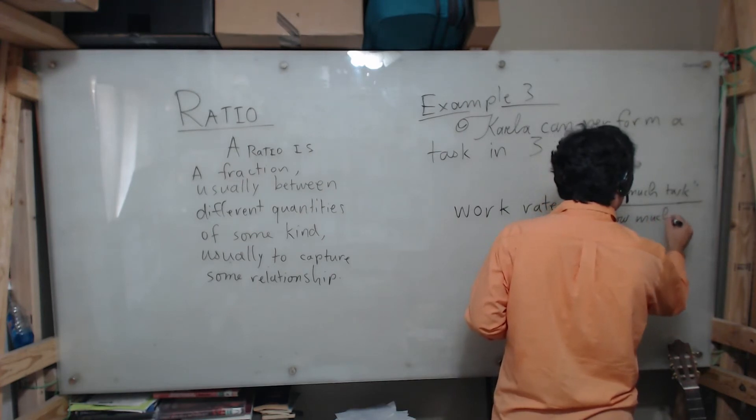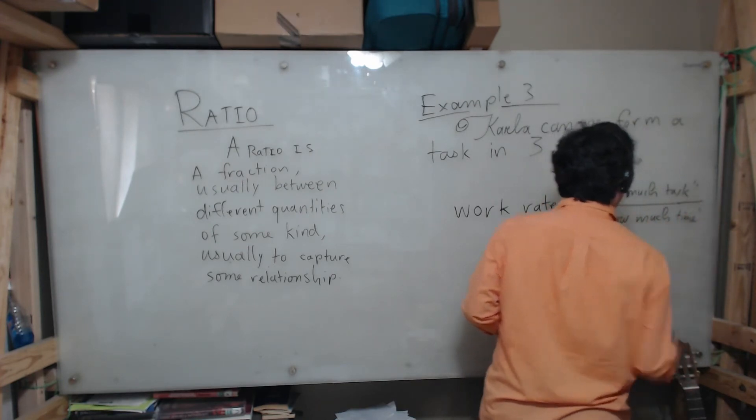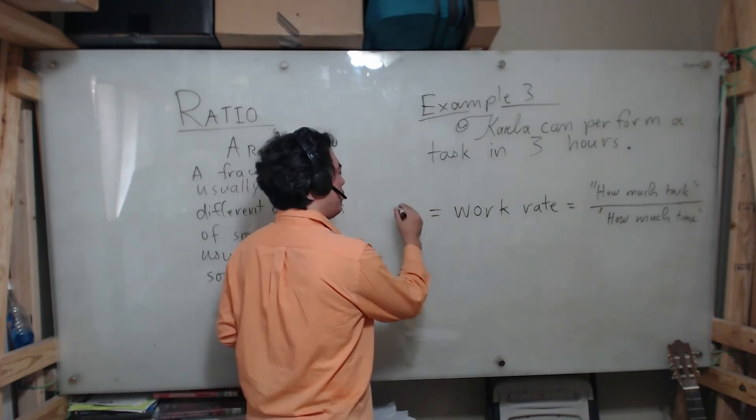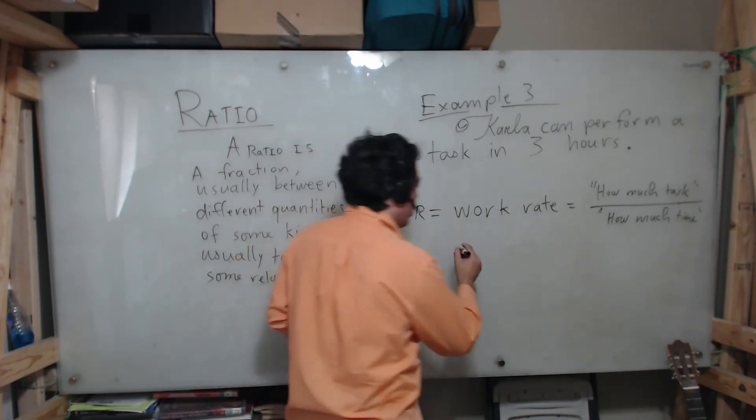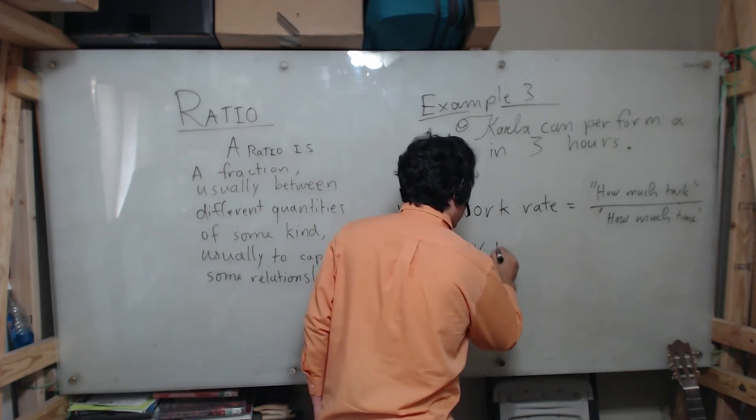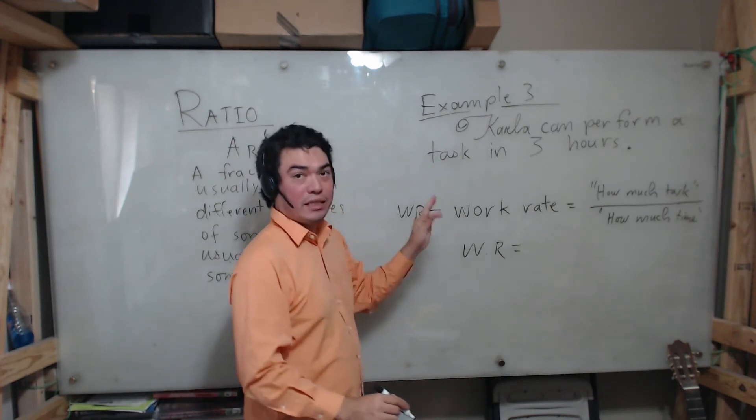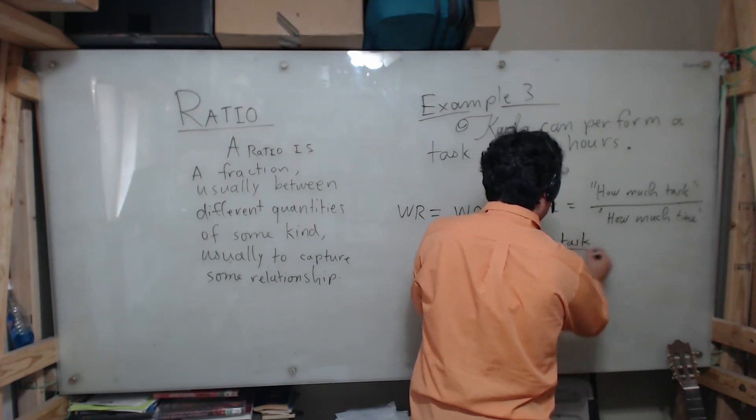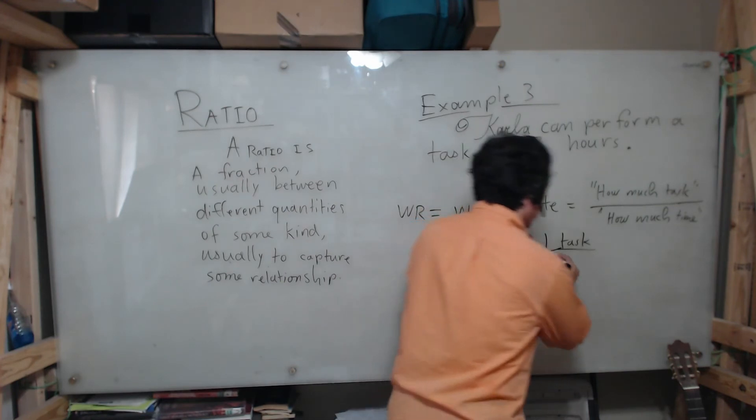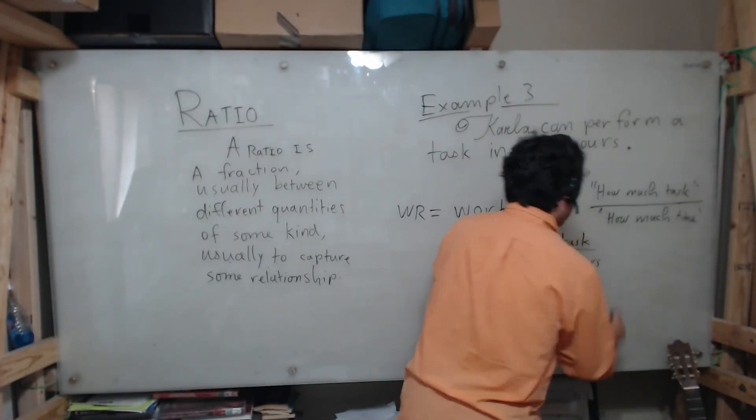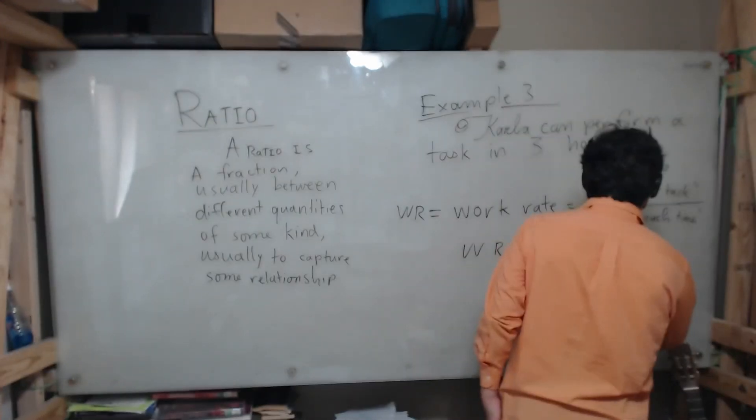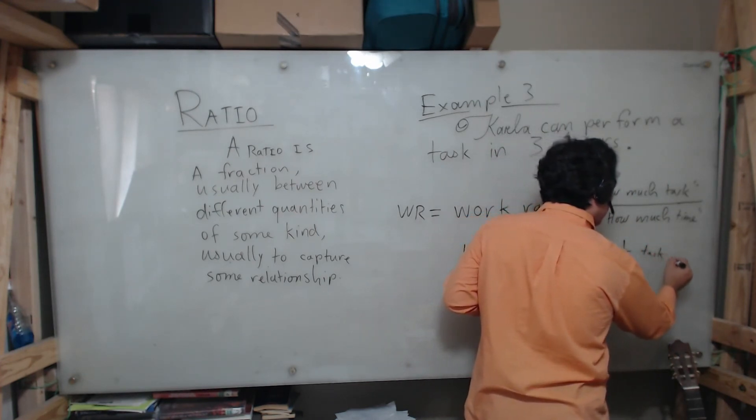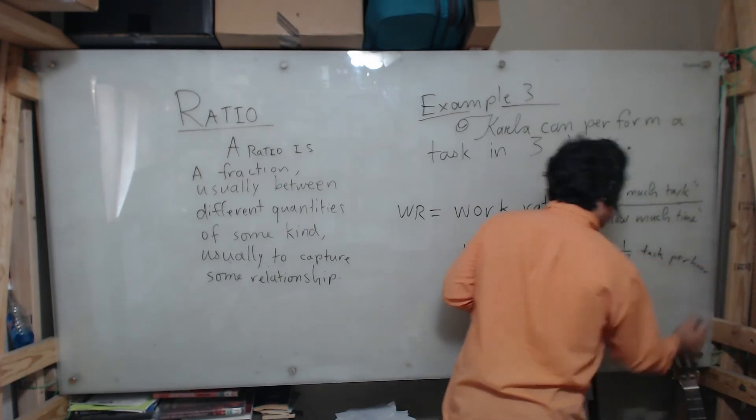Here we can see that Carla, let's call the work rate WR for short, Carla's work rate will be one task, because she can perform a task, so one task in how much time? Three hours. So we can see that she can do, if we want to think back to our speed example, one-third task per hour. Carla has a work rate of one-third task per hour. If she could perform the task in two hours it would have been one-half task per hour and so on. We'll see several examples like this soon.